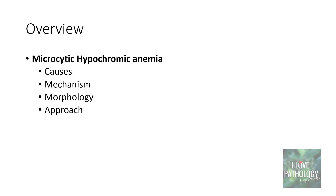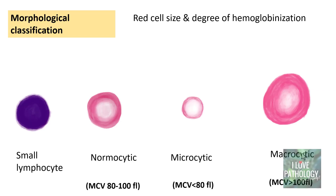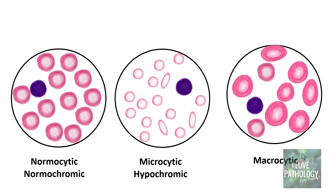In the previous video we tried to understand what normocytes, microcytes, and macrocytes are, based on the relationship between the size of the nucleus of small lymphocytes and the RBCs. Anemias are referred to as normocytic normochromic when RBCs are approximately the size of a small lymphocyte, microcytic hypochromic when smaller, and macrocytic anemia when larger.